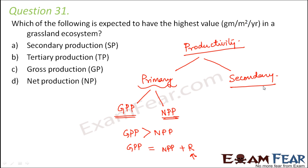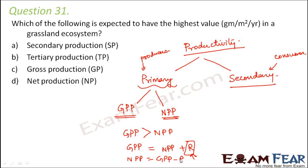Secondary productivity is the rate of re-synthesis of organic matter by the consumers, since primary productivity is all about producers. What we observe is that net productivity value gradually decreases with each trophic level as we go higher. This is because the value of R — the respiration loss — gradually increases with each trophic level. As R increases, net primary productivity decreases because Net Primary Productivity = Gross Primary Productivity minus R.